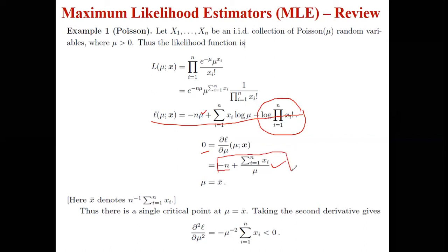We differentiate the log-likelihood with respect to mu and set it equal to zero. After cross-multiplication and simplification, we get mu equals summation of x_i over n, which is equal to x-bar. That means the Poisson distribution parameter mu is estimated by the sample mean of all the values.